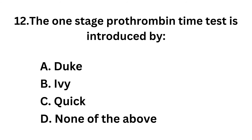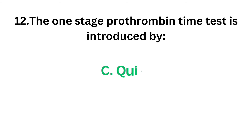Question number 12. The one-stage prothrombin time test is introduced by. Option A: Duke. Option B: Ivy. Option C: Quick. Option D: none of the above. The correct answer is Option C, Quick.